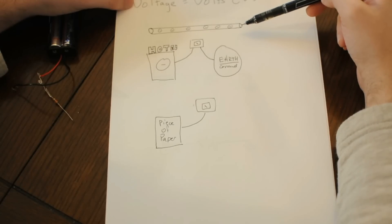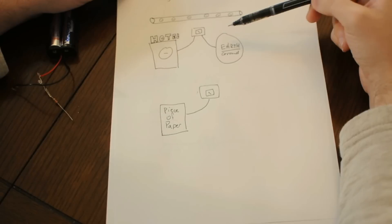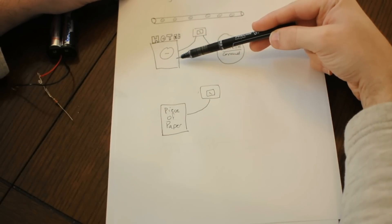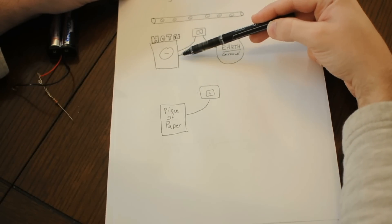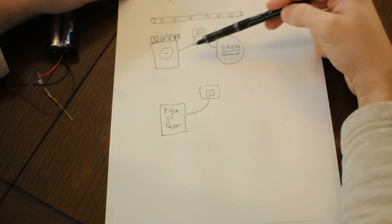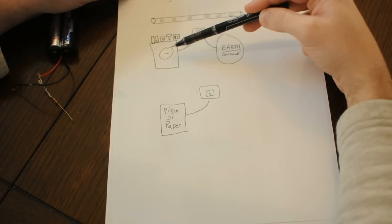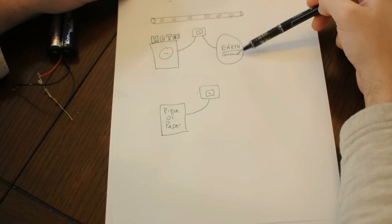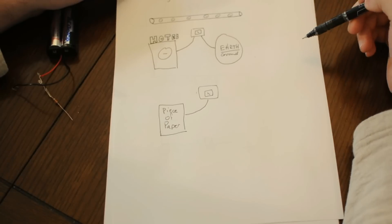There's no current flowing. So voltage describes the relative difference in crowdedness between two different points. Imagine you had an electron hotel full of electrons. You hooked up one probe of the multimeter, and then the other one you connected it to Earth. It would tell you the relative difference in crowdedness, the voltage, or the potential, between the electron hotel and planet Earth. You could do it with a piece of paper. You could do it with anything else.